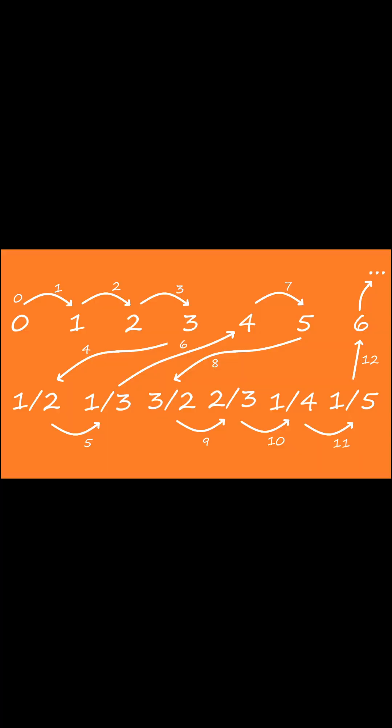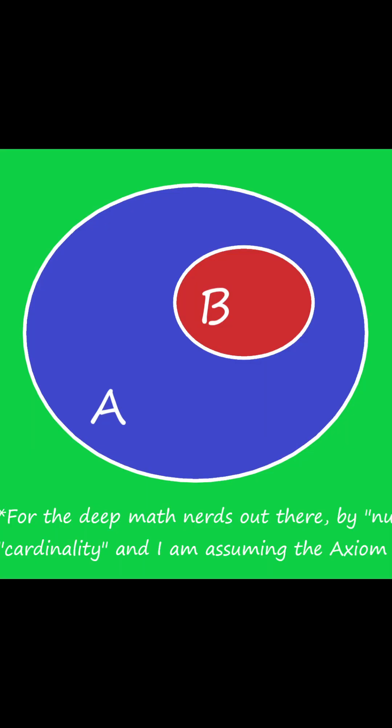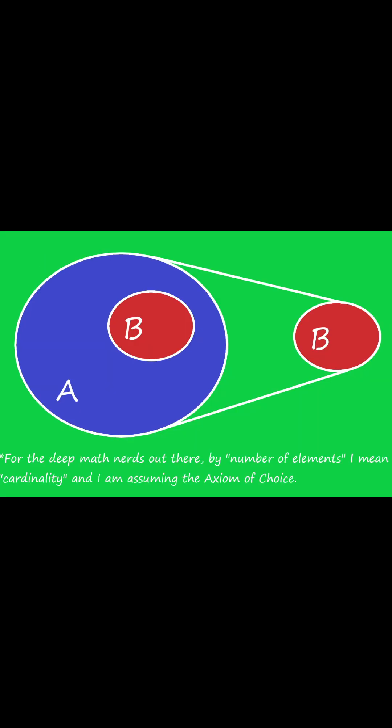Similarly, there are exactly as many integers as there are rational numbers. In fact, this is what it means for a set to be infinite. A set is infinite if it has a proper subset, that is a subset that doesn't have everything in it, that has the same number of elements as the set itself.